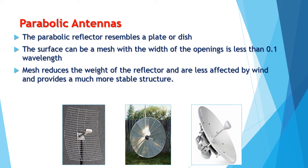Parabolic antennas — here are actual pictures. A parabolic reflector resembles the shape of a plate or dish. It is not necessary that the dish have a solid metal surface to efficiently reflect or receive signals. The surface can be a mesh, provided that the width of the openings is less than 0.1 wavelength. Mesh parabolic antennas considerably reduce the weight of the reflector, are less affected by wind, and in general provide a more stable structure.